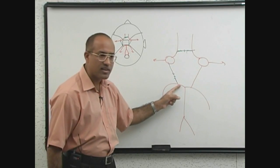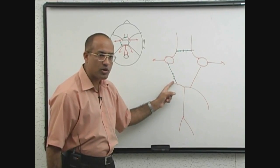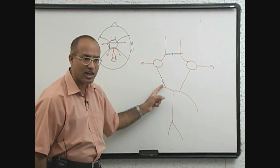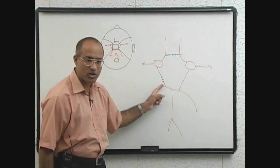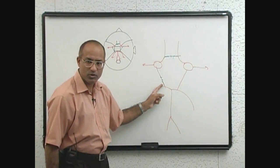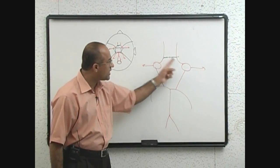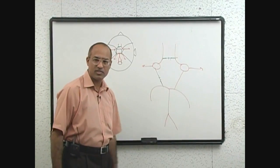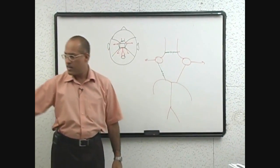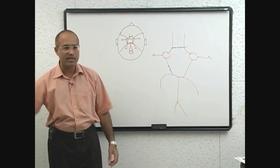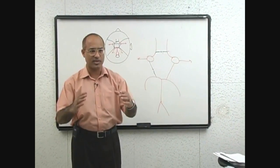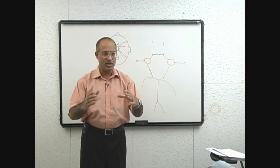An aneurysm present at the anterior communicating artery may compress the optic chiasma. If an aneurysm is present at the posterior communicating artery, it will compress the third cranial nerve. So you should know exactly where this ring is present and what structures are nearby.